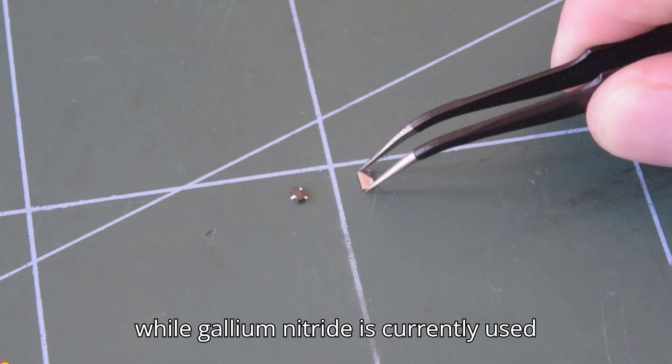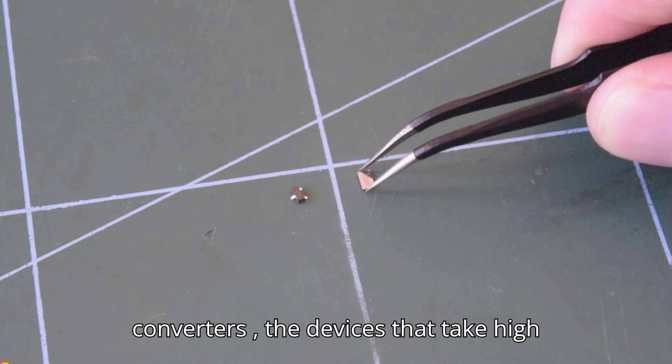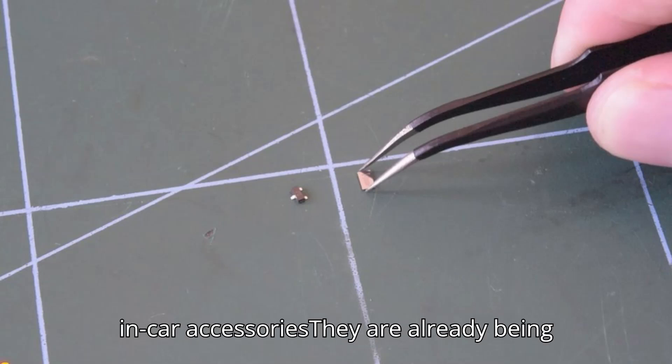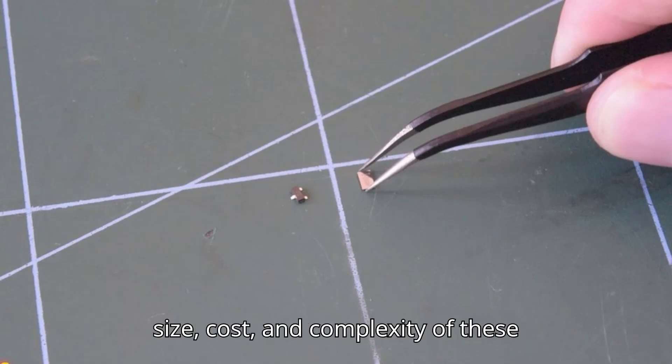Likewise, while gallium nitride is currently used for lower power applications like DC-DC converters—that is, the devices that take high battery voltage down to 5 to 12 volts for in-car accessories—they are already being prototyped into full-size traction inverters, which promises to reduce the size, cost, and complexity of these devices.